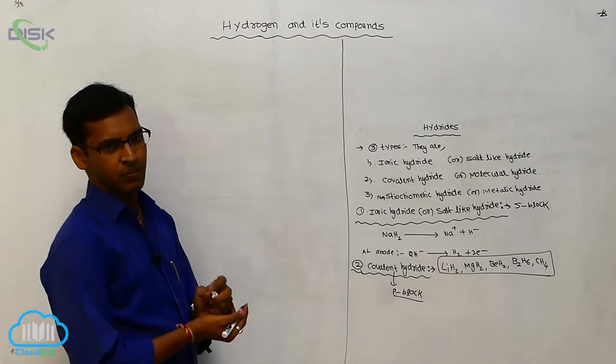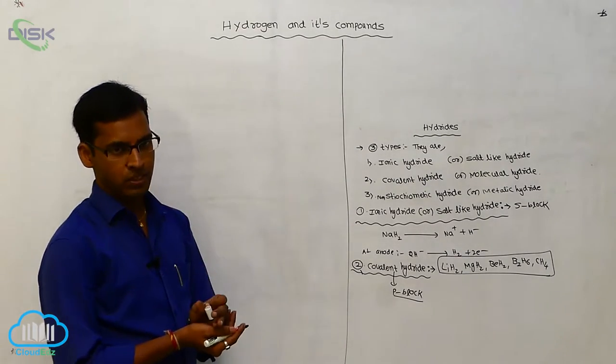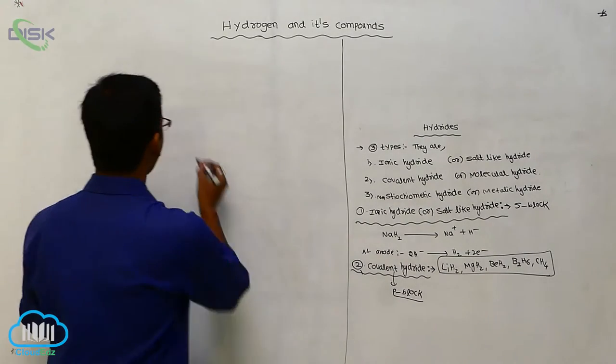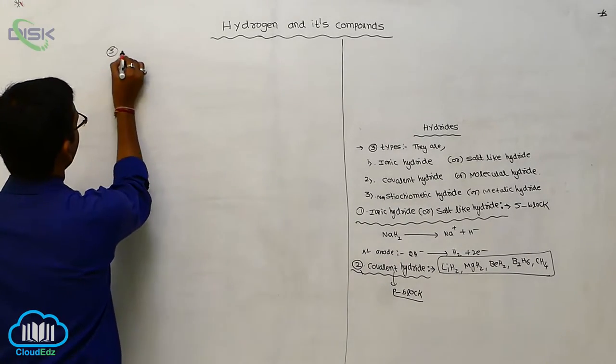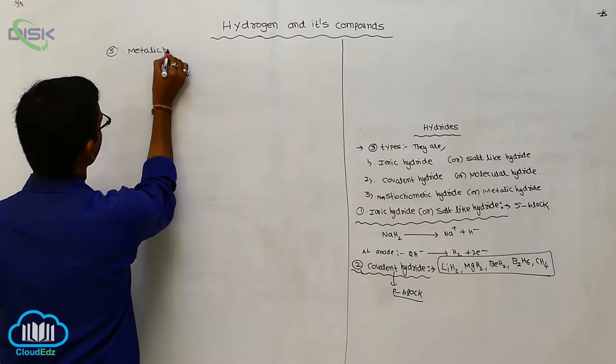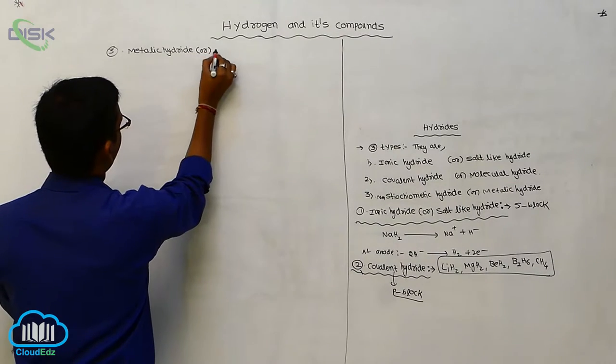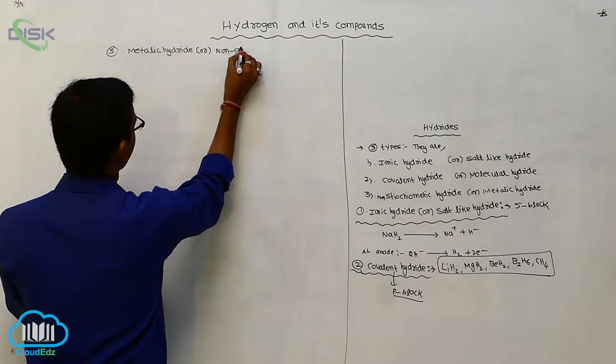In those three types, one is electron-deficient hydride, electron-excess hydride and electron-precise hydride. And third one is metallic hydride or non-stoichiometric hydride.